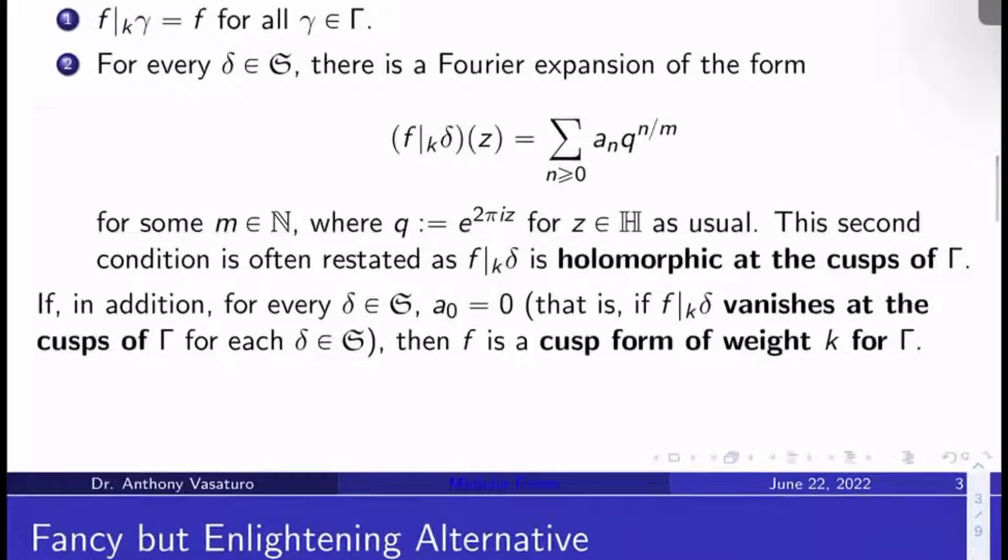If, in addition, for every delta in SL_2(Z), this first coefficient a_0 actually vanishes, in other words, f bar sub k delta vanishes at the cusps of big Γ for every delta in SL_2(Z), then we'll call f not just a modular form of weight k for big Γ, but a cusp form of weight k for big Γ.